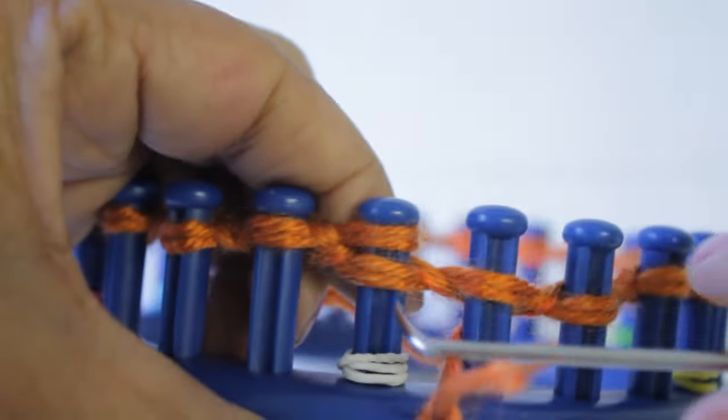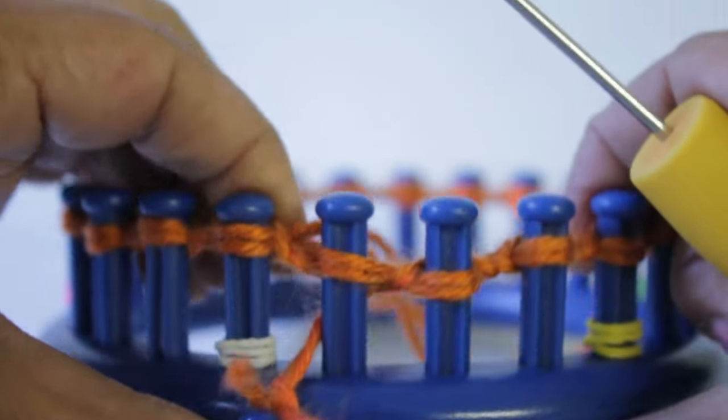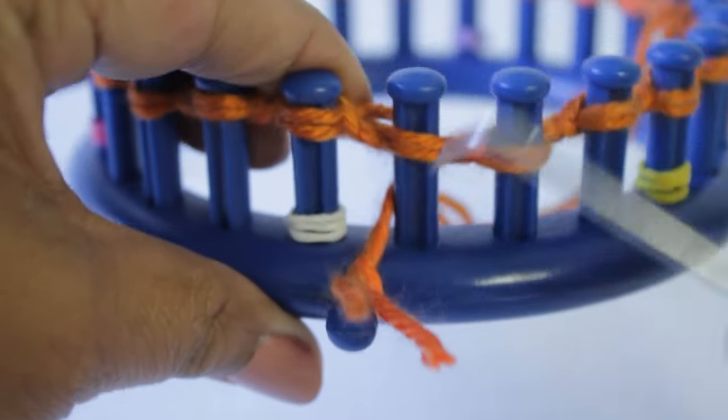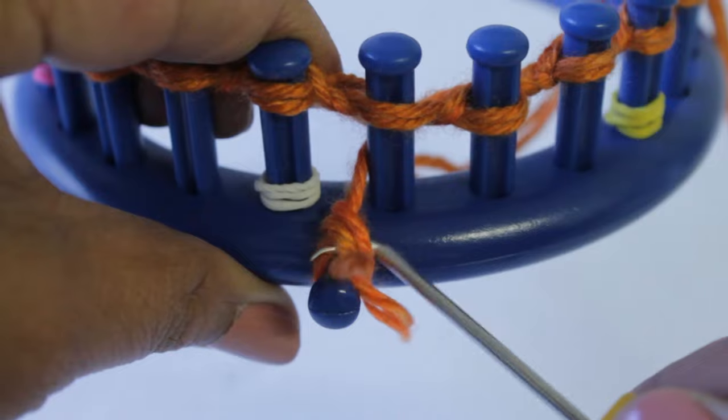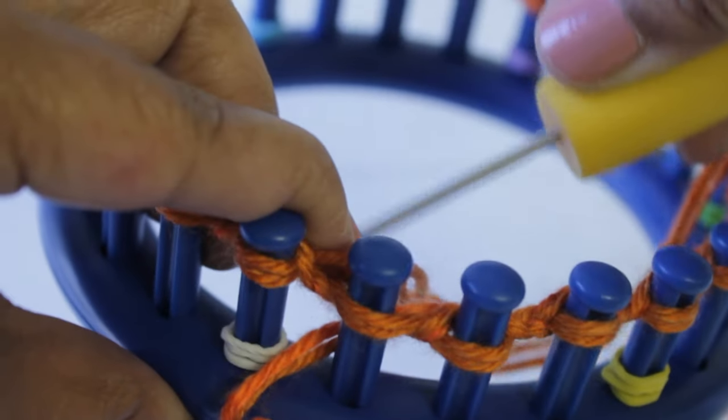Once you knit off peg 24, you're done with row one and you're ready for row two. But before you leave, you should take the knot off that anchor peg because your yarn is now secure and you don't need to do that. Alright, cool.